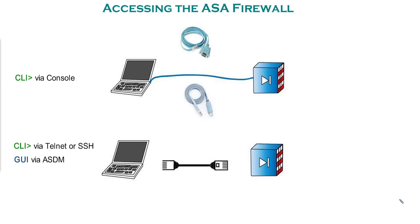To access the Cisco ASA firewall, you need a console cable connected to its console port, and configure your host device for a 9600 baud rate. That is only for the basic and initial configurations. After that, you need remote access via Telnet or SSH. These are a bit different from IOS routers and switches — for example, you cannot Telnet on all interfaces, so you have to specify which interfaces are enabled for Telnet or SSH.